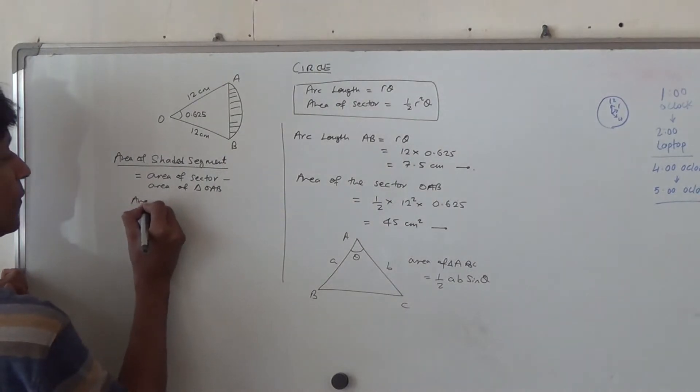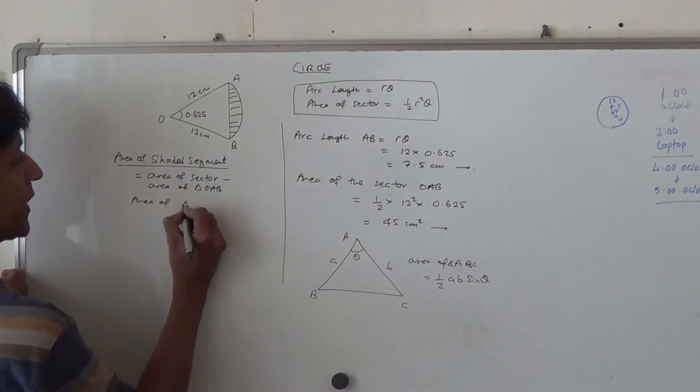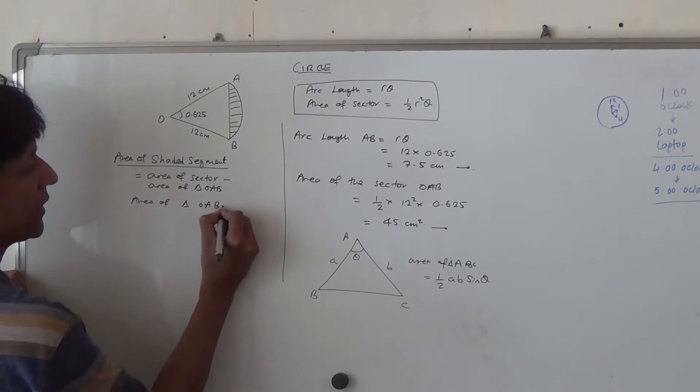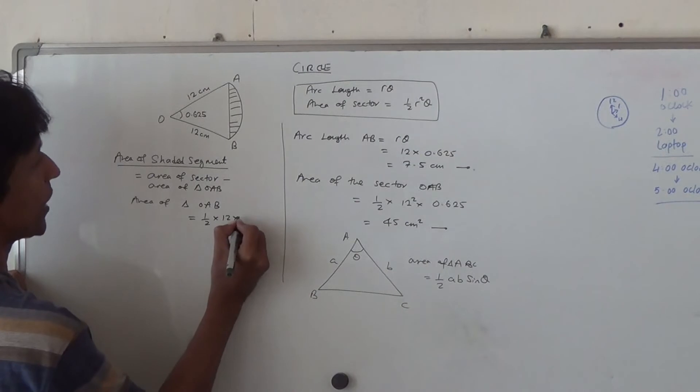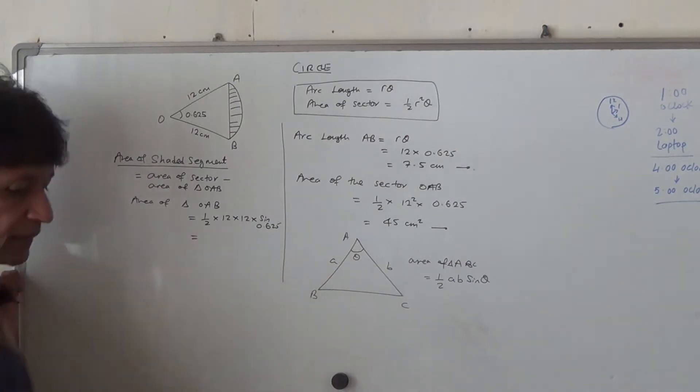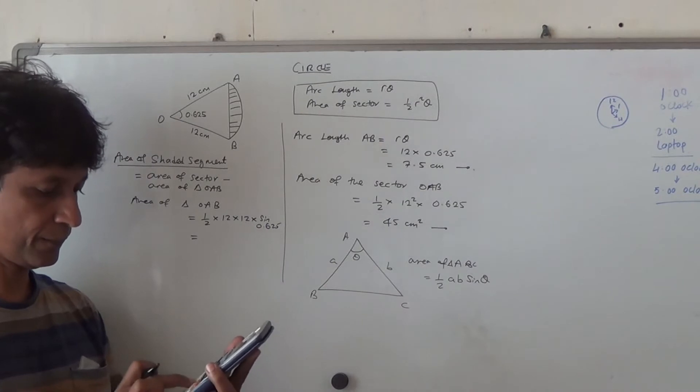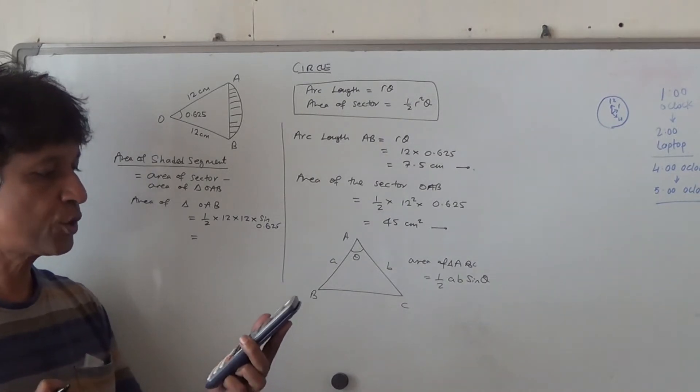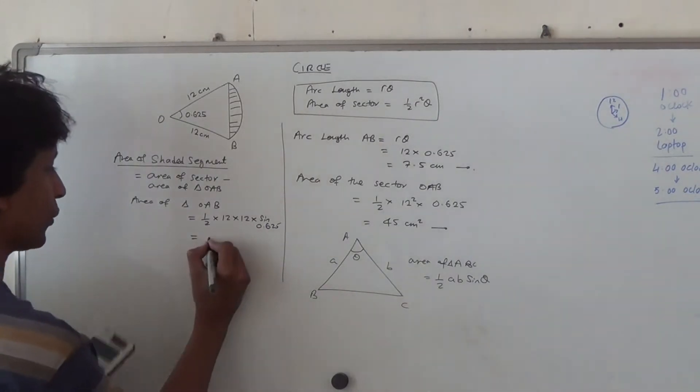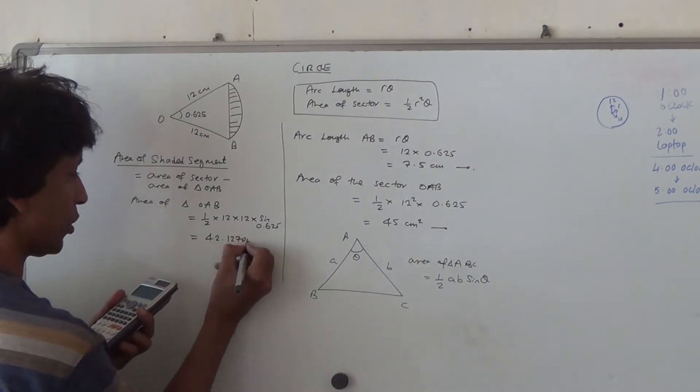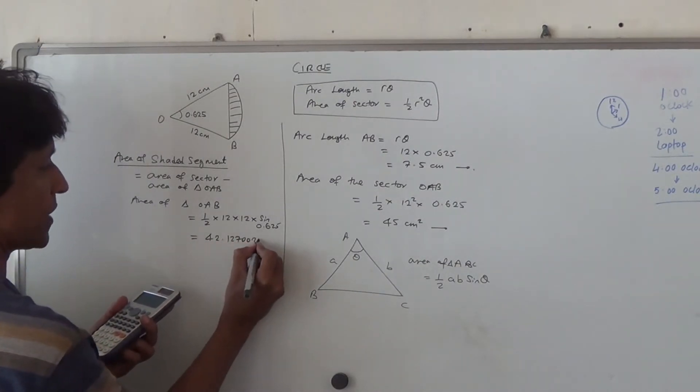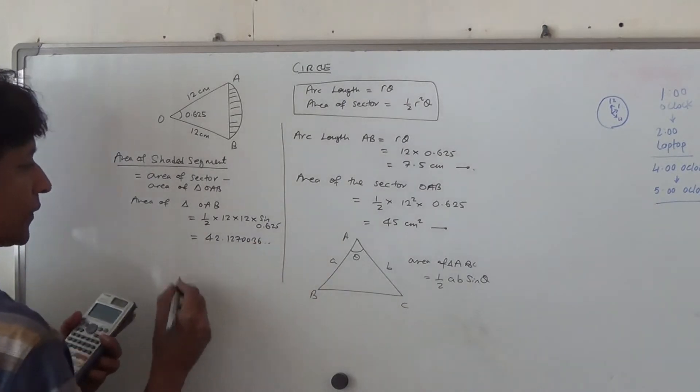So area of triangle OAB should be equal to half times A, which is 12 times B, which is 12 times the sine of 0.625. So let's do that in the calculator. So that's going to become 42.127, so 42.12736, et cetera.